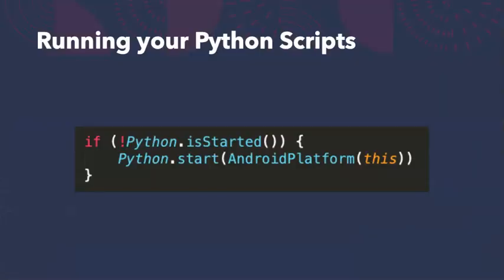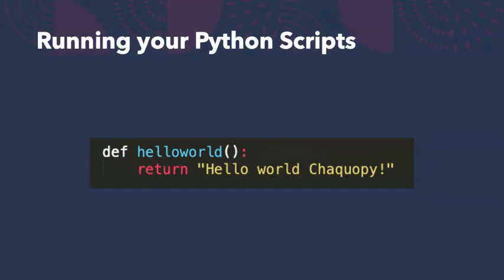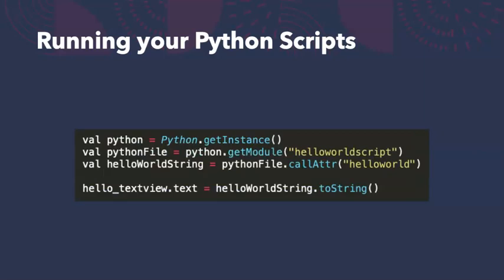Now that Chiquapi is installed in your project and your scripts are in the app, let's run them within our activity. Use this method shown on the screen, either in your activity or application class, to get Python running in your app and ready to execute your scripts. If your app will be using Python consistently across multiple activities, it's better to start Python in your application class; otherwise, start it in the activity that needs it. Here I have an extremely bare Python script called HelloWorldScript.py. Finally, we invoke the Python function from within our code and get a return value as a PyObject. The PyObject can be cast into almost any type.